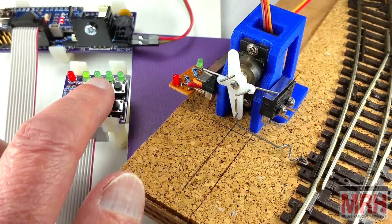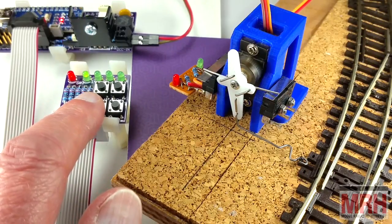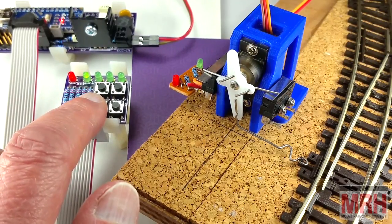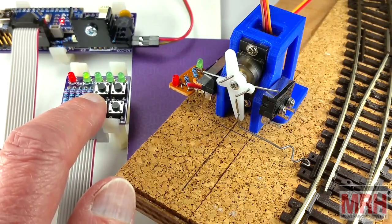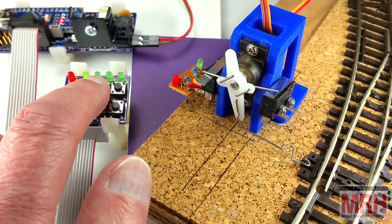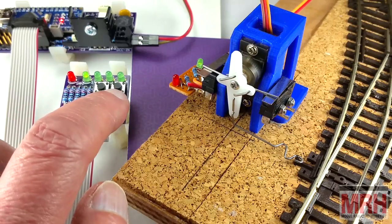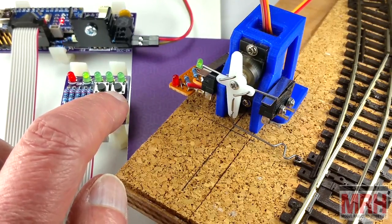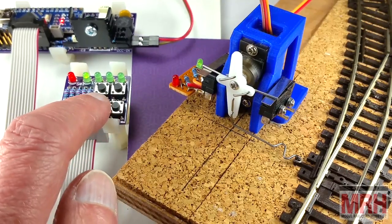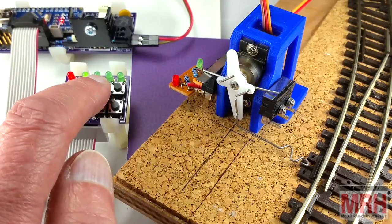Press select to set the leftmost servo position. And use the left and right buttons. Set the throw to switch the turnout correctly. If we're happy, we can press select again. Get the rightmost position set up. And again, use the right and left buttons to get the linkage which we think is the correct position. Press select to check the throw.